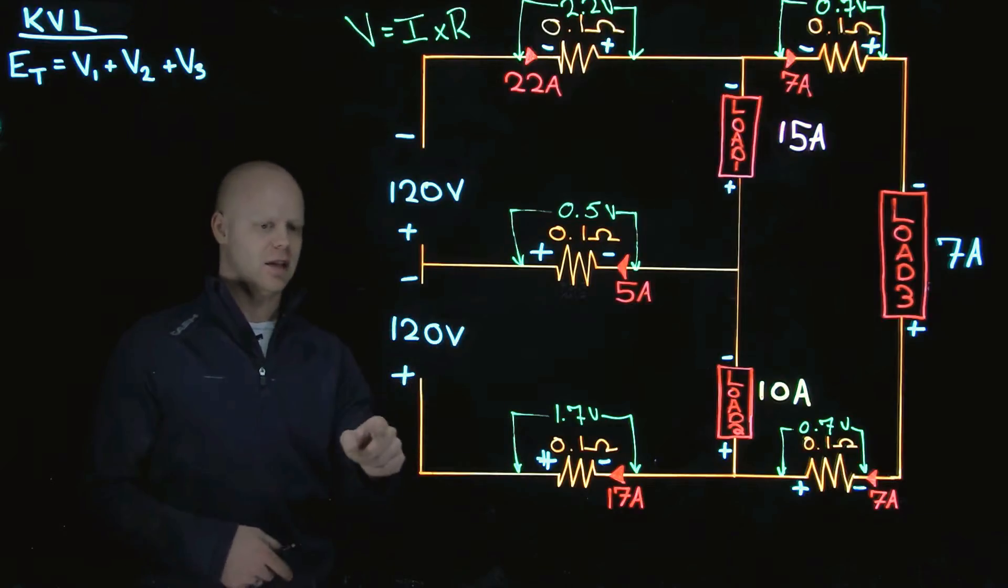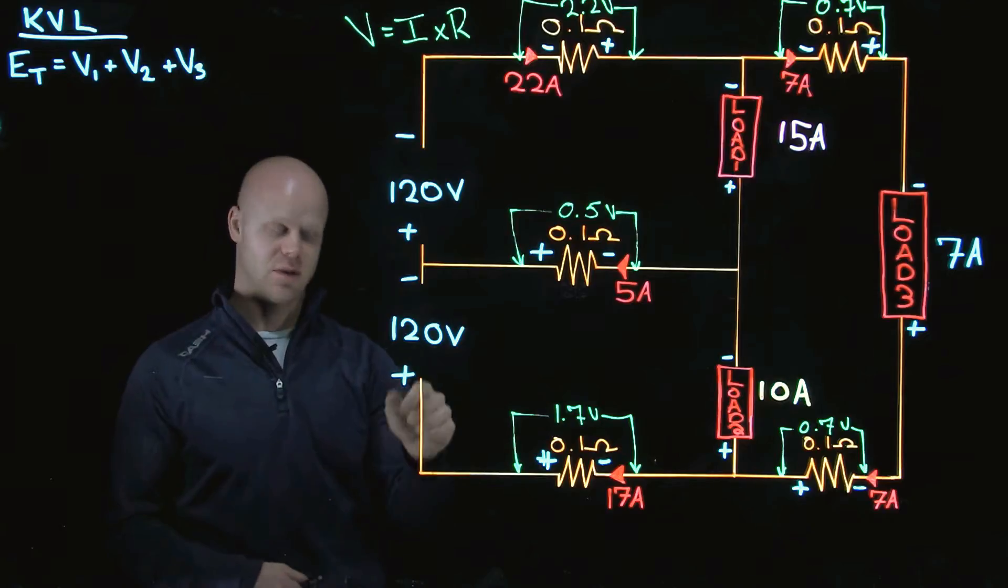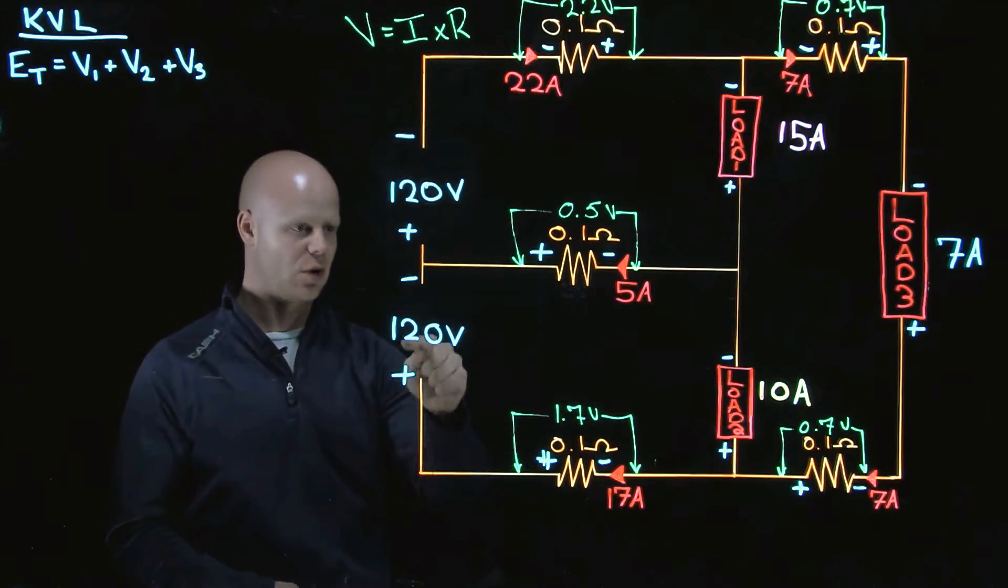If you close the loop, if you start here and go all the way through this, it should equal 0. If you plug this into your calculator and we're all done, every loop that you create, if you do all of the voltages including the source, you should have 0 show up on your calculator.